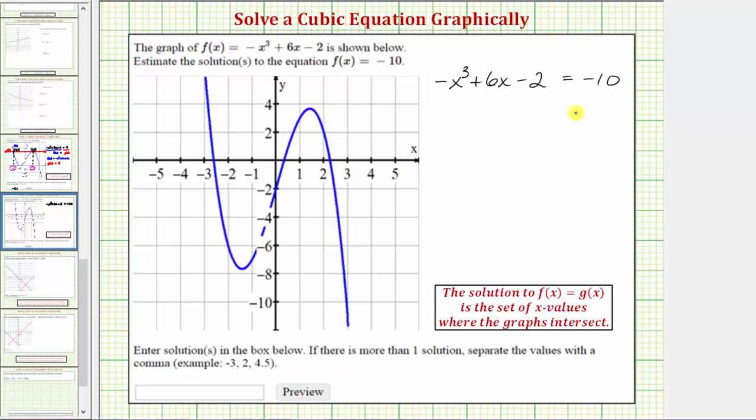To solve this equation graphically, we can let the left side of the equation be equal to f(x) and the right side equal to g(x), which means now we need to determine where f(x) equals g(x). The solution to f(x) equals g(x) is the set of x-values where the graphs of f(x) and g(x) intersect.